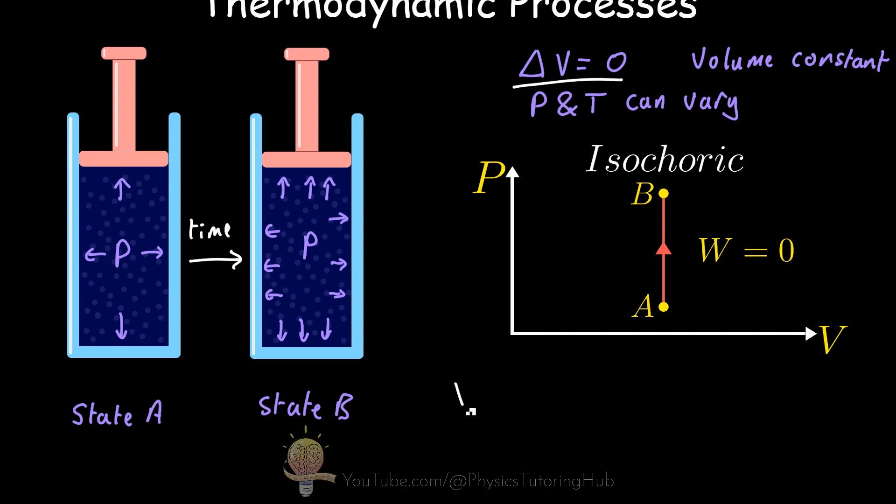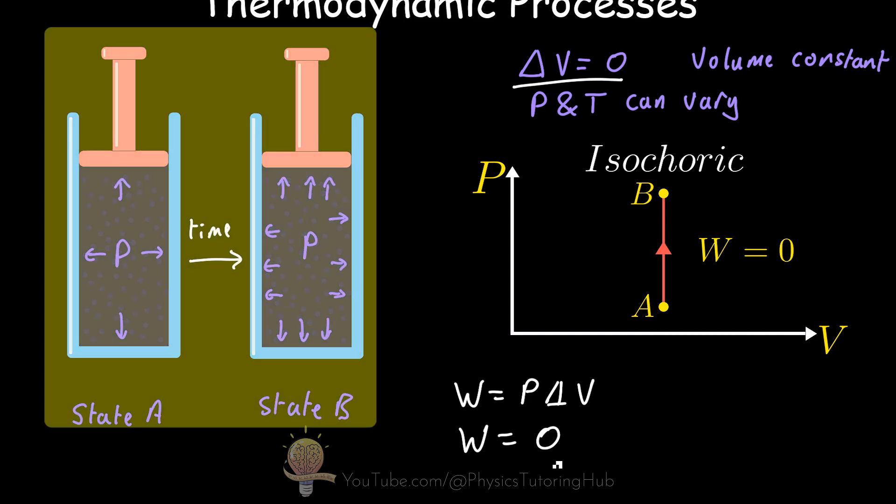What does this mean in terms of work done on this system according to our PV diagram? We know from the isobaric process that work done is equal to the pressure multiplied by the change in volume, in other words, the area under the PV diagram. The area underneath this PV diagram for an isochoric process is zero. There is no area, and therefore there is no work done for this type of process.